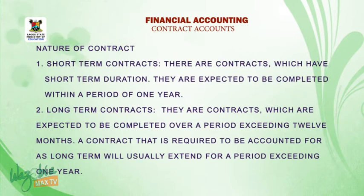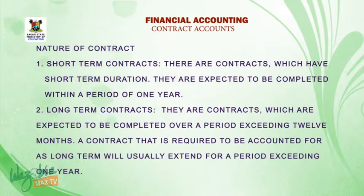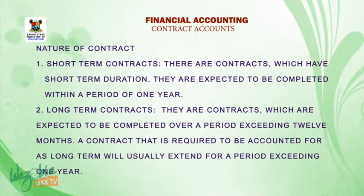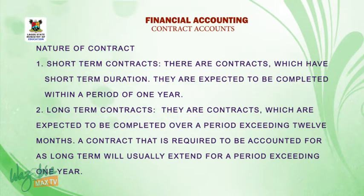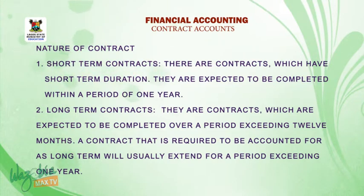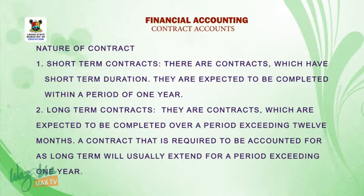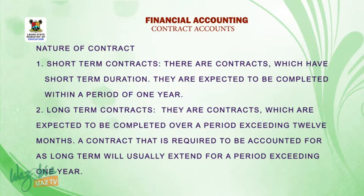Nature of contracts. Short-term contracts: these are contracts which have short-term duration and are expected to be completed within a period of one year. Long-term contracts: these are contracts which are expected to be completed over a period exceeding 12 months. A contract that is required to be accounted for as long-term will usually extend for a period exceeding one year.